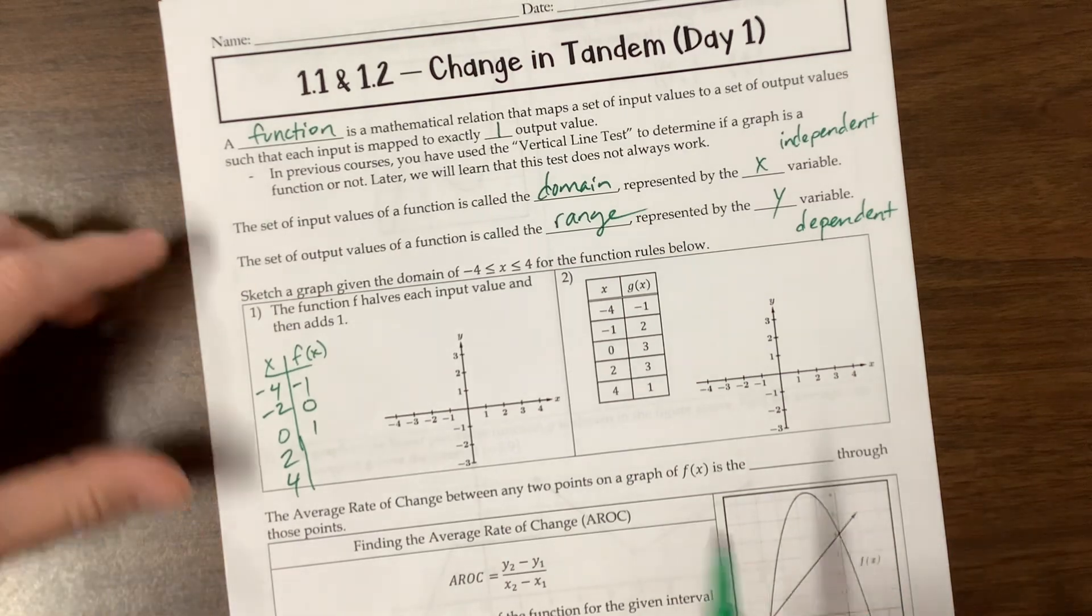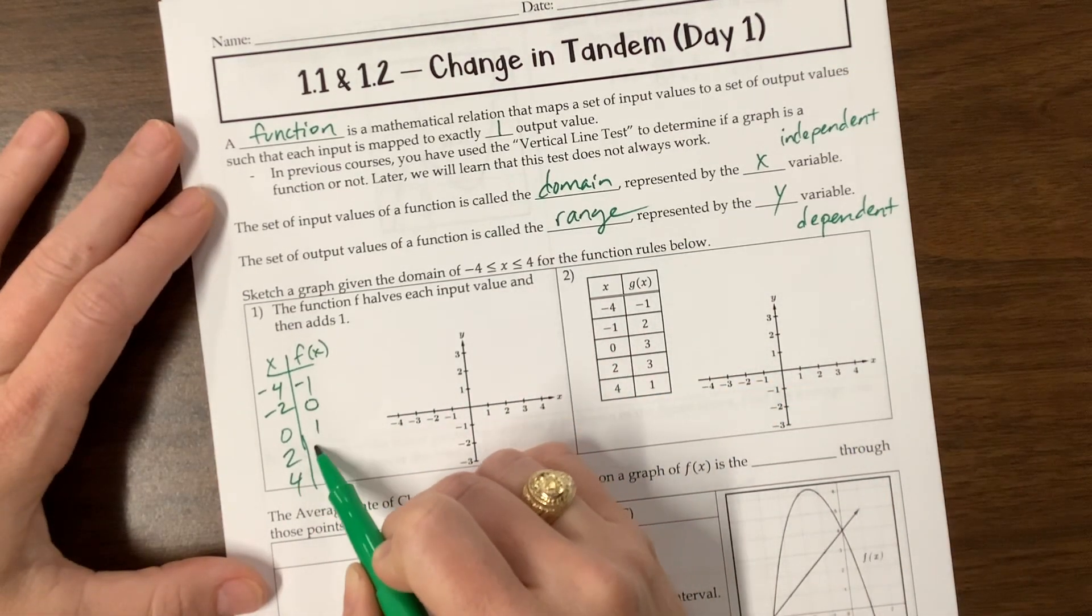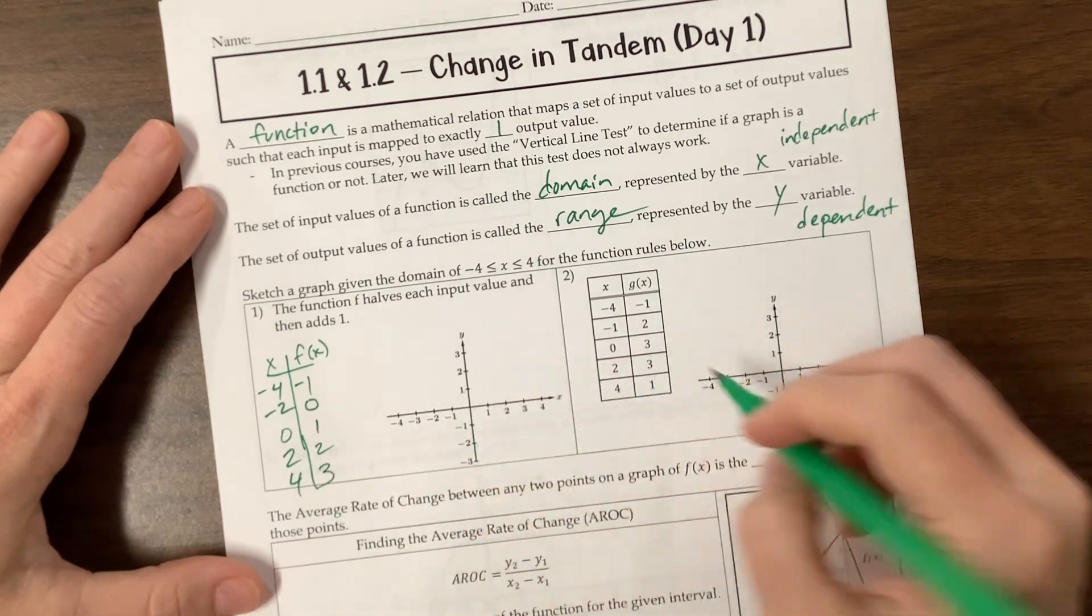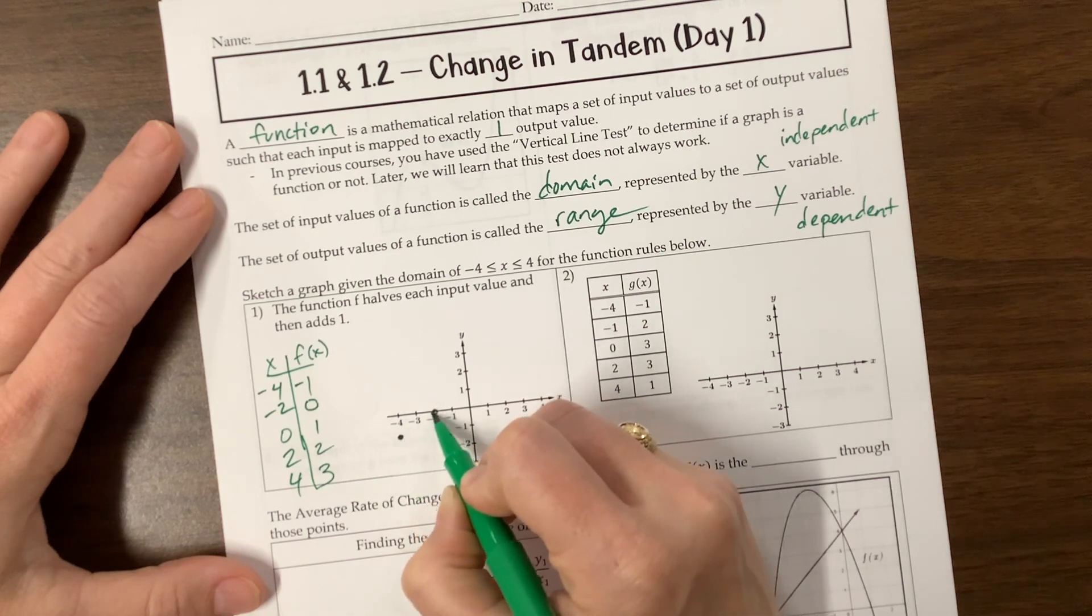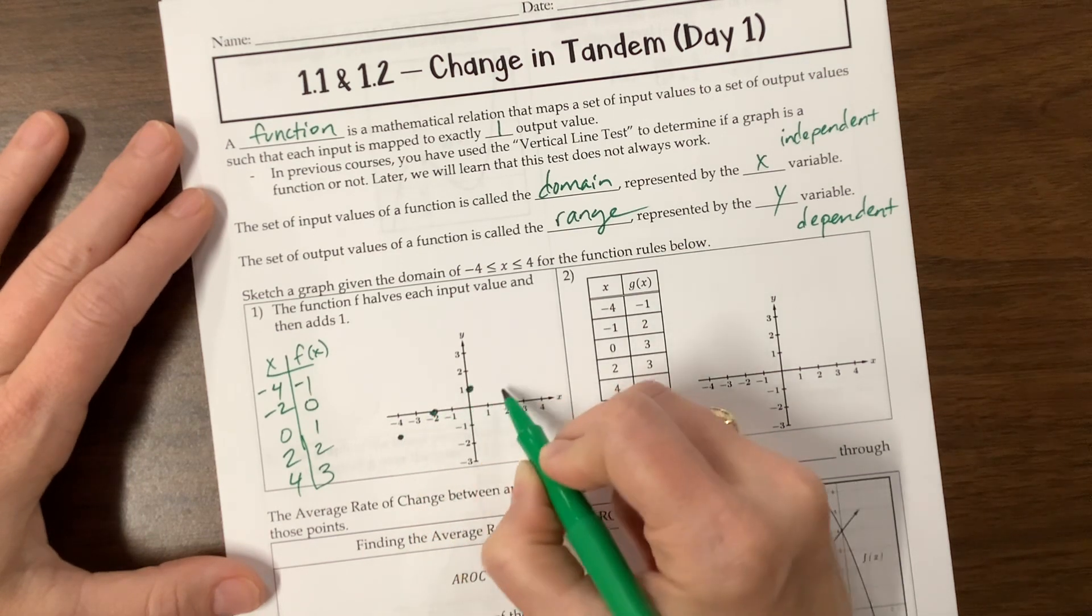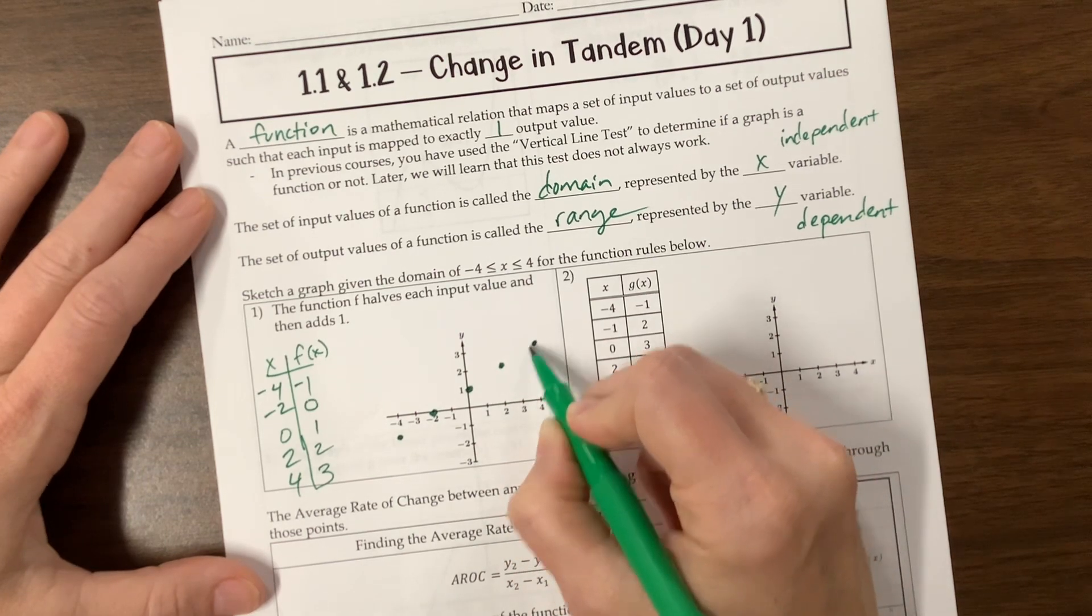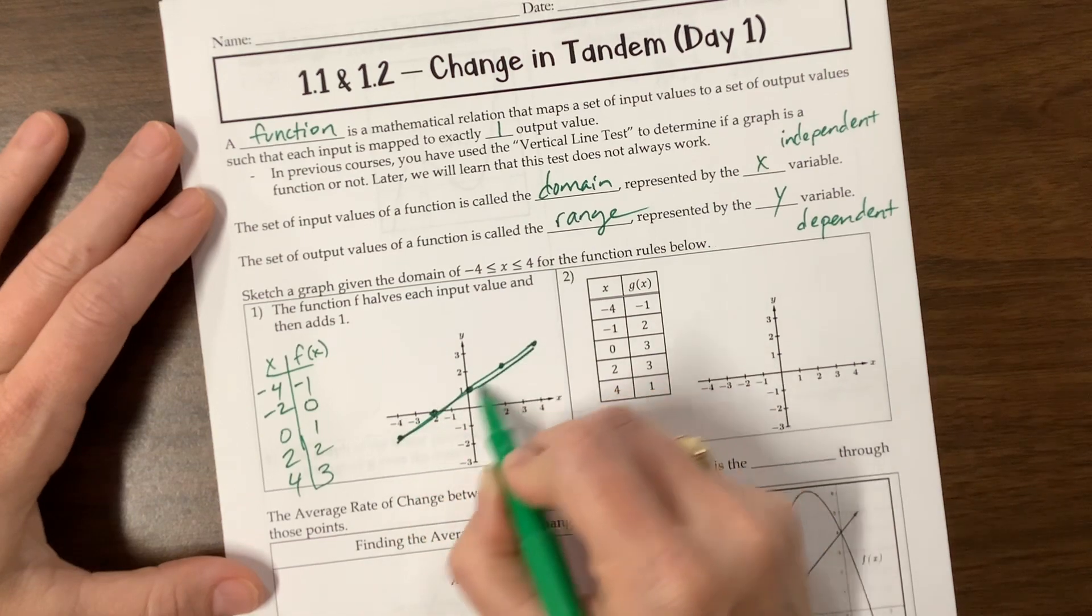This is not the only way to attack this problem, but I just thought I'd start here. Half of 2 is 1, plus 1 is 2. Half of 4 is 2, plus 1 is 3. So I'm going to plot these points. I'm at negative 4, negative 1. I'm at negative 2, 0. I'm at 0, 1. I'm at 2, 2. I'm at 4, 3. And it does have all of these. It's going to be this continuous line through them.